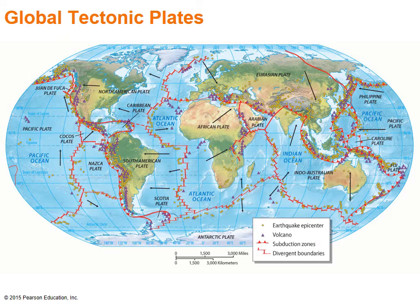This map of the world shows the close relationship between tectonic plate boundaries and the world distribution of earthquakes and volcanoes. Note the so-called Pacific Rim of Fire that includes the eastern coasts of Asia and the western coasts of both North and South America.